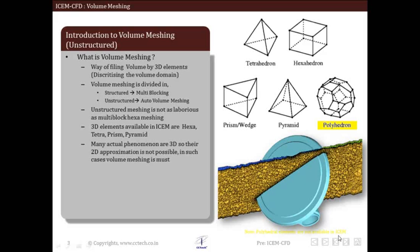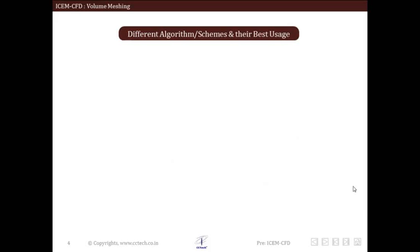It is important to note that polyhedron is a type of 3D element but it is not available in ICEM CFD. Volume meshing is generally used in different types of CFD applications like internal and external flow simulations, thermal analysis, structural analysis, and so on.